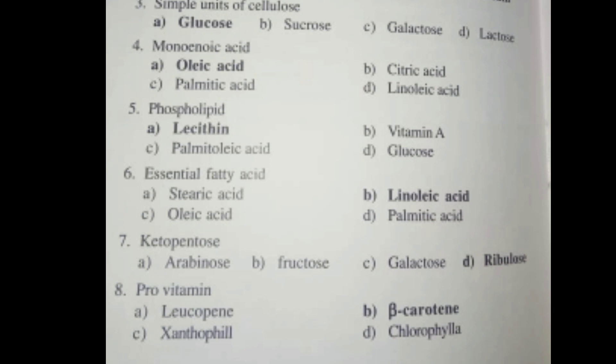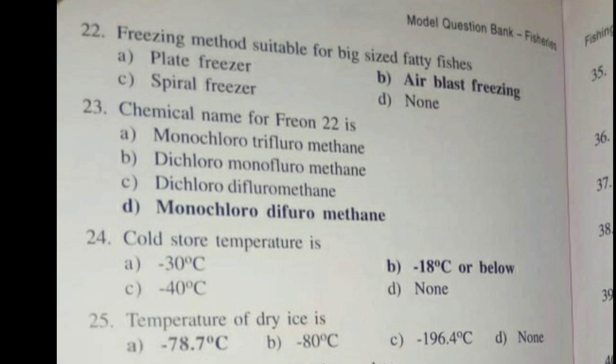Question 7 - Ketopentose. The right answer is Ribulose. Question 8 - Provitamin. The answer is Beta-Carotene.